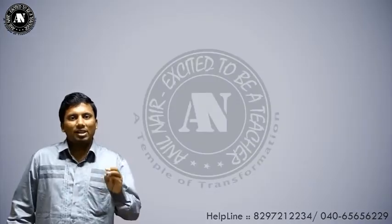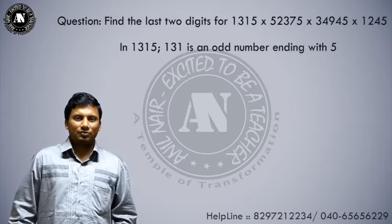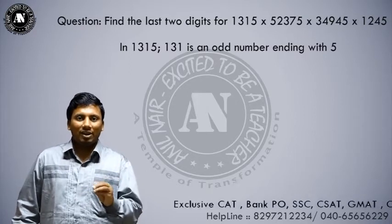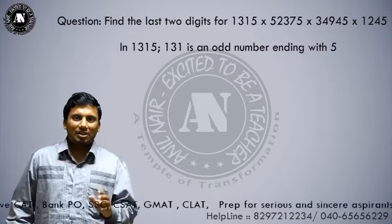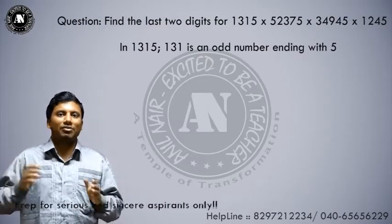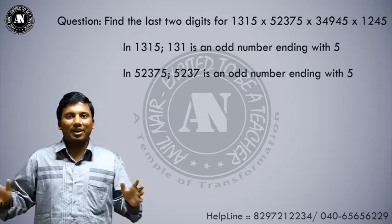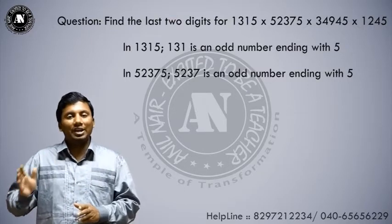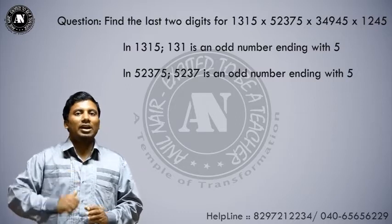Let us apply the concept to the original problem. See the problem carefully. 1315: 131 is an odd number, so this is an odd number ending with 5. Next, 52375: 5237 is again an odd number ending with 5, so the second term is also an odd number ending with 5.